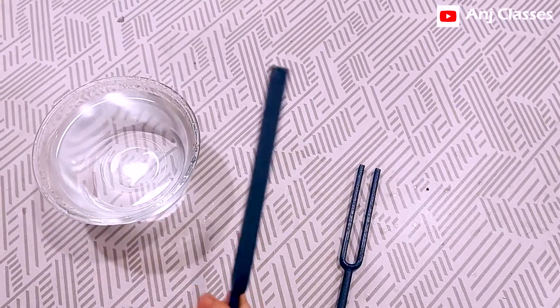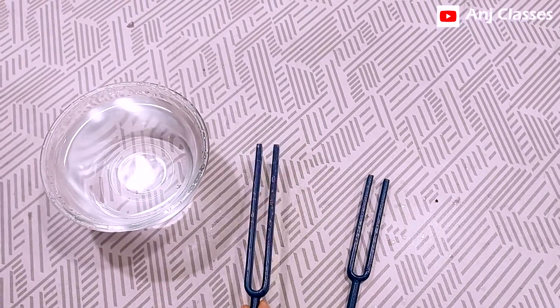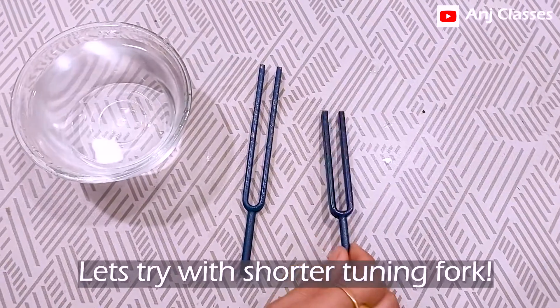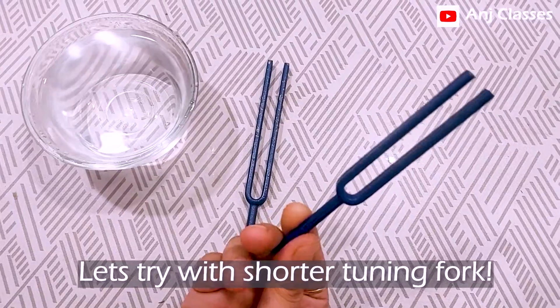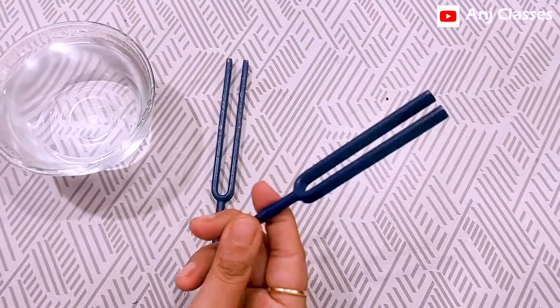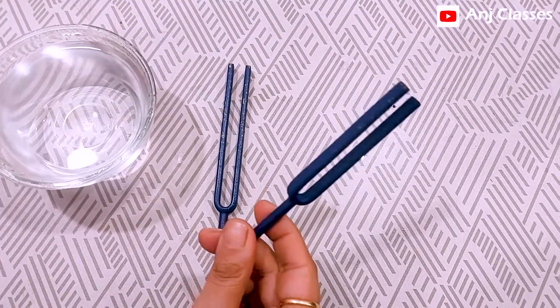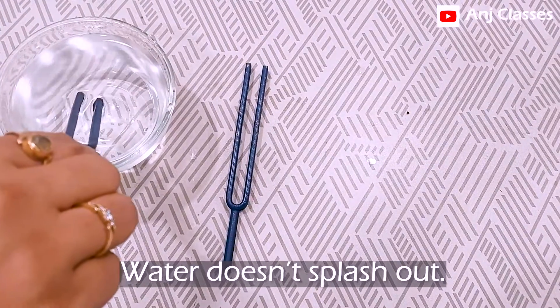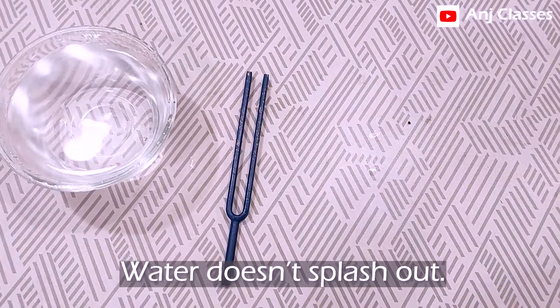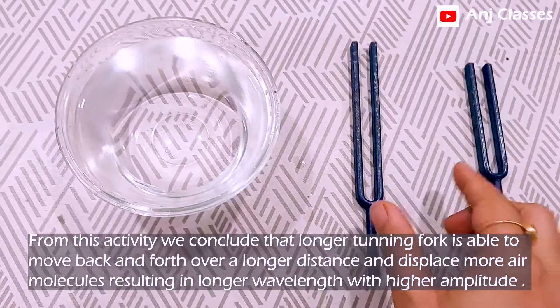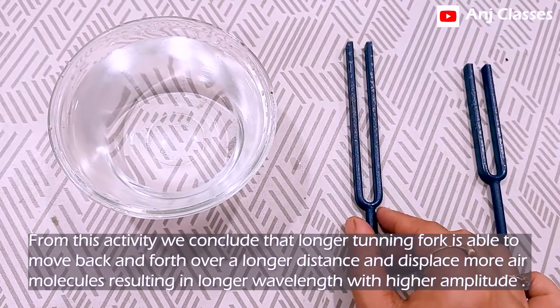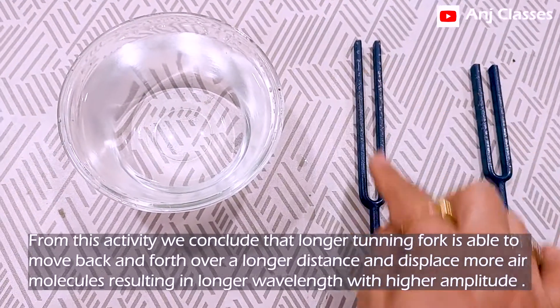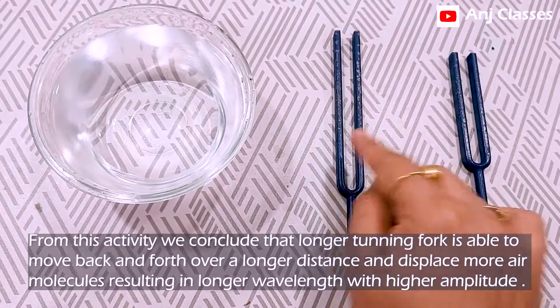So now we will try with the shorter tuning fork. Let's see what happens when I strike it on a hard surface. From this activity we conclude that the longer tuning fork is able to move back and forth over a longer distance.